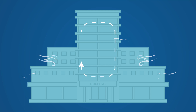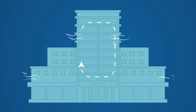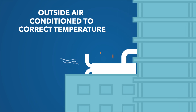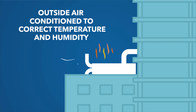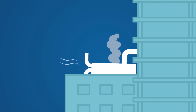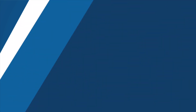However, increasing the amount of outside air can also cause problems. Outside air has to be filtered and conditioned to the correct temperatures and humidity ranges before it can be distributed throughout the hospital. And many of our air handling units were not designed to condition and use 100 percent outside air in the building, so they struggle to keep up.